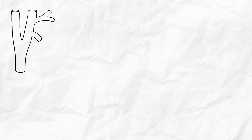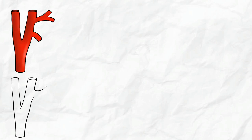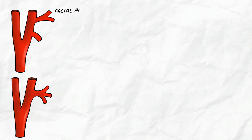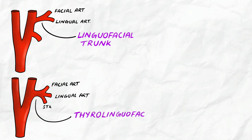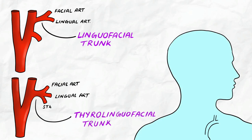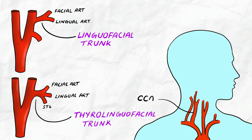Similar to other vasculature in the body, the facial artery can have many anatomical variations. It may arise as a single vessel from the linguofacial trunk or a thyrolinguofacial trunk. In the absence of a normal external carotid artery, the facial artery may arise from either the internal carotid artery or the common carotid artery.